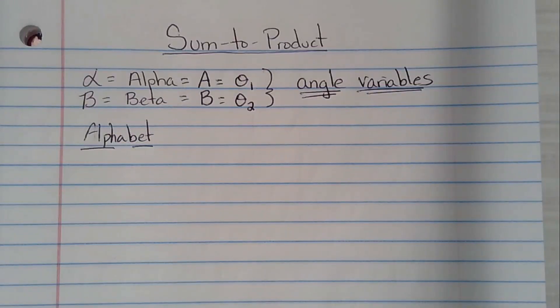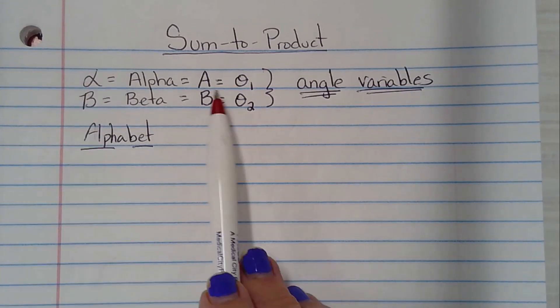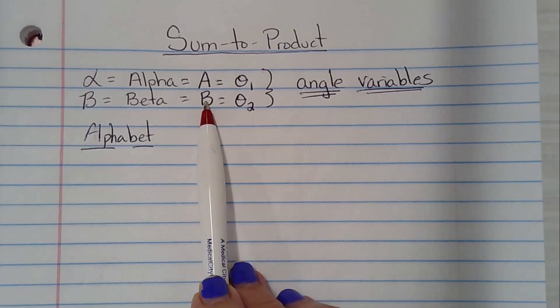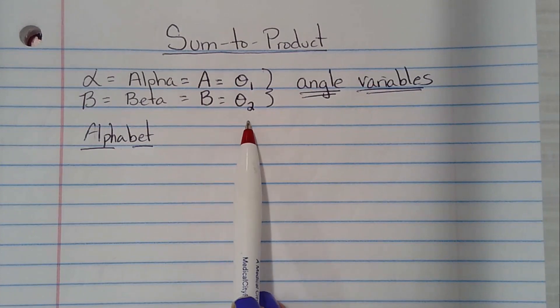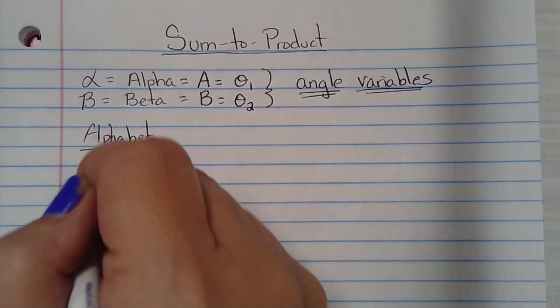All right, so our angle variables on our sheet are alpha and beta. You can use a capital A and B if you prefer, or you might see theta sub 1 or theta sub 2. So all we're going to do is have a problem that says something like this.